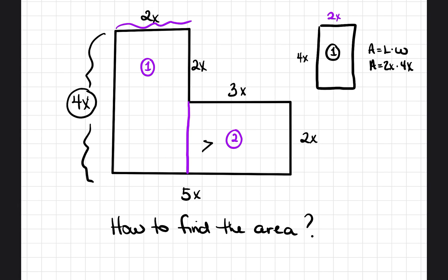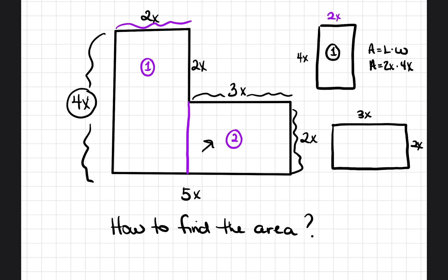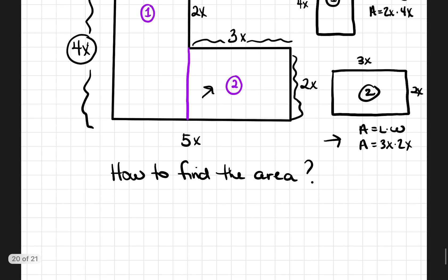Now let's look at the second rectangle. We just have to figure out the length and the width. The top portion is already identified as 3x, and the side portion is 2x. So the area equals length times width — area equals 3x times 2x. Now we know how to find the area of both box 1 and box 2.